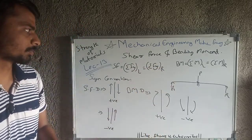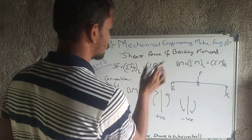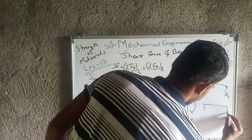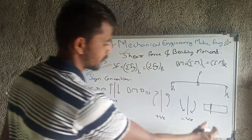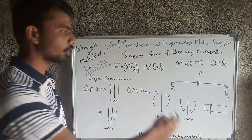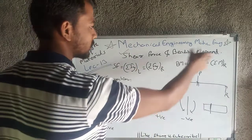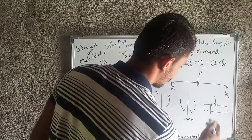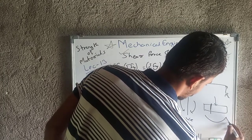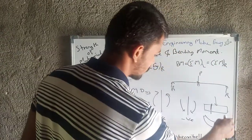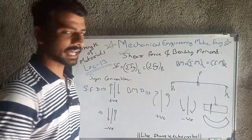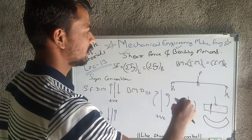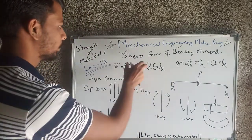So, shear force — what exactly is it? Shear force is nothing but the force which causes shear. If there is a member and at a section shear is occurring, the force that causes that shear is called shear force. And bending moment is what causes the moment — if a force is applied, the cross-section of the beam tilts, causing the beam to bend. This is nothing but bending moment: that which causes the beam to bend.